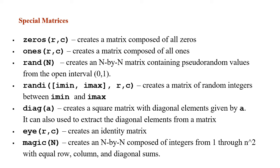The function ones creates a matrix composed of all ones, but you can easily create a matrix composed of all threes, for example, by simply creating a matrix of ones and then multiplying it by three. The function rand takes an integer as an input and creates an n by n matrix containing random values from the open interval zero and one. Randi creates a matrix of random integers between imin and imax, so you provide the minimum value, maximum value, and the size of the matrix. Notice these functions can be used with different inputs. You can use the command help followed by the function name to learn more.